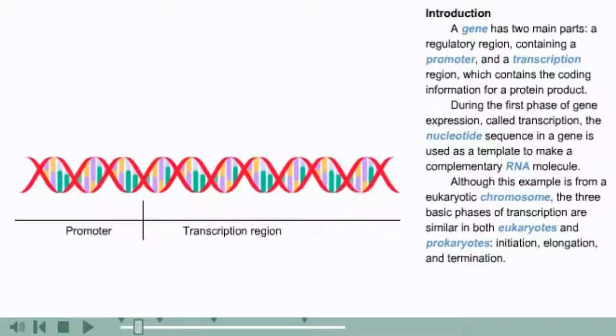is used as a template to make a complementary RNA molecule. Although this example is from a eukaryotic chromosome, the three basic phases of transcription are similar in both eukaryotes and prokaryotes: initiation, elongation, and termination.